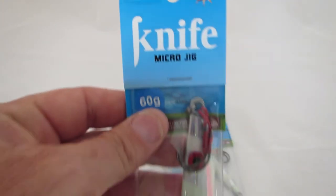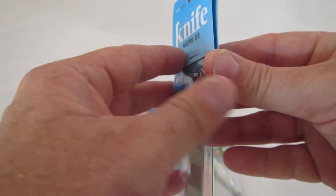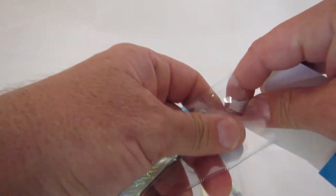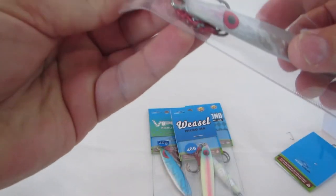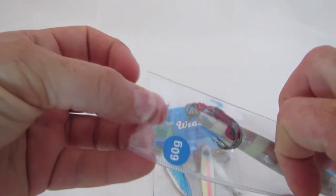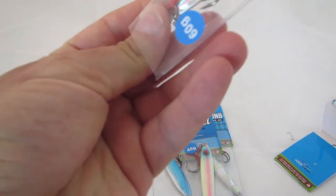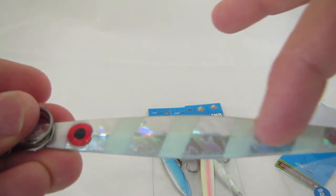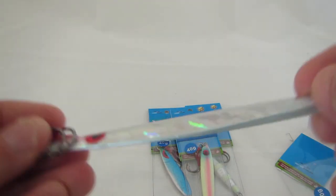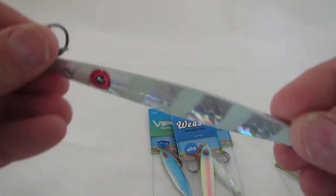It'll give you that edge over other microjigs. So let's take this one out of the packet and have a look at it. This is the knife one, like a mini kingfish jig. This is a 60 gram one. You'll notice this distraction pattern of lumo paint which when it falls, flashes around and attracts fish to the lure.